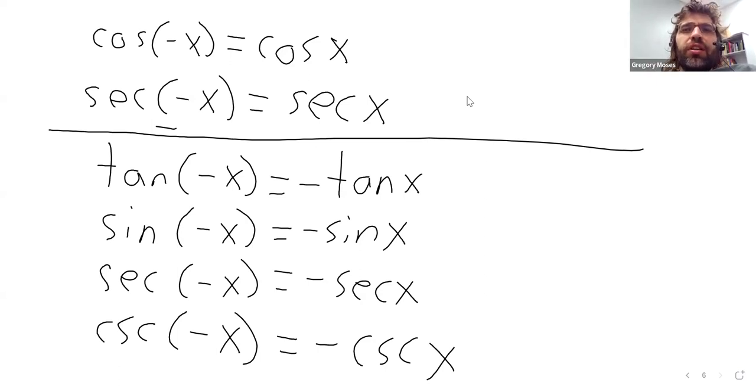So these are the even and odd identities. So what's going to come next is kind of... it feels a little weird grouping these in with identities. Because what's going to come next are really just definitions. How did we define the secant of x? We called it 1 over the cosine of x. So this is the definition of the secant.